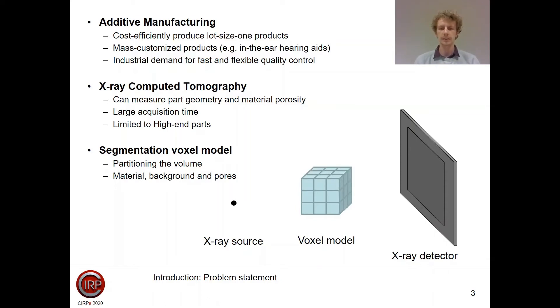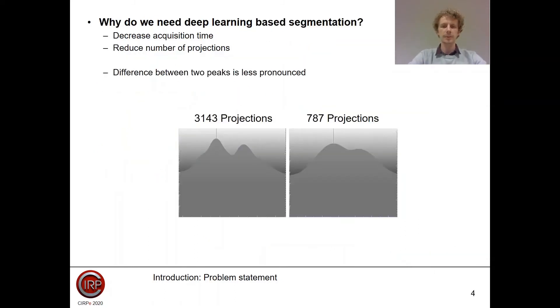Then we can start analyzing this three-dimensional model, but before we can do that we have to segment our model. We have to decide which pixels belong to the material and which pixels belong to the voids or to the background. With conventional segmentation techniques we calculate a specific threshold value based on the gray level histogram, but if we start changing the settings of our CT system like reducing the number of projections, we see that the peaks of the material and the peak of the air become less pronounced and it becomes very difficult to calculate a specific threshold value.